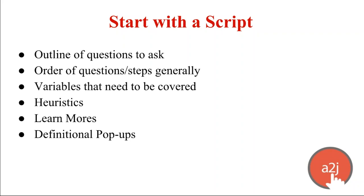At the bare minimum, I would suggest having an outline of the questions that need to be asked. Before you get into the software, think about the order — for example, whether to ask spouse-related questions before or after issue-related questions. Think about that in an outline beforehand. I like to use Roman numerals — Roman numeral one: step name, here are the seven things I need to capture; Roman numeral two: step name, here are the things I want to capture. I also include the variables that will be covered by those questions.